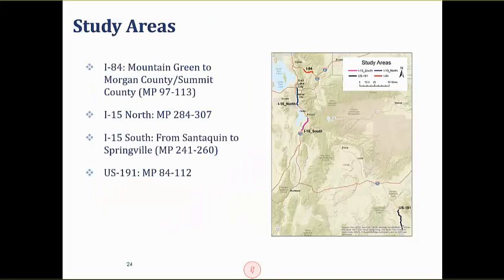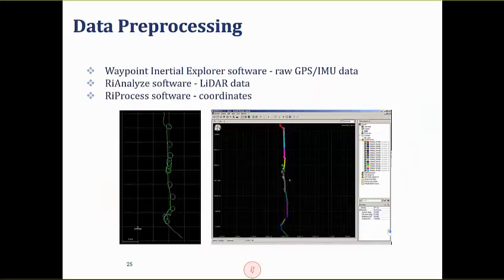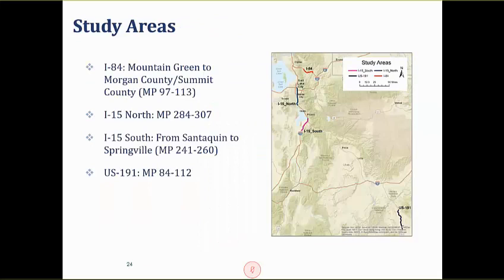For the data collection study areas, we selected four road sections in Utah representing different roadway conditions: I-84 (rural interstate connecting Ogden to Park City), I-15 North (urbanized environment), I-15 South (more rural/suburban), and US-191 (rural state highway). The total length of these four sections adds up to just under 80 miles. We completed the data collection in approximately one day.